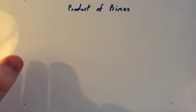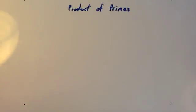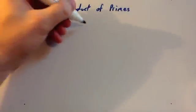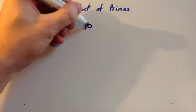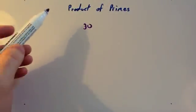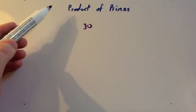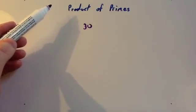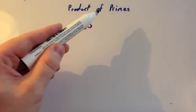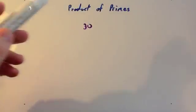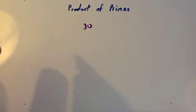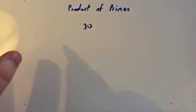In today's lesson we're going to look at product of primes and how to write numbers as a product of primes. I'm going to start off by looking at an example. Let's look at 30. To write 30 as a product of primes, let's first look at the words. Product means multiply — what you get when you multiply numbers together. And primes are your prime numbers. If you can't remember what your prime numbers are, watch the video Prime Numbers now.